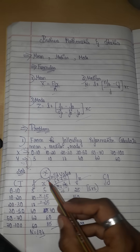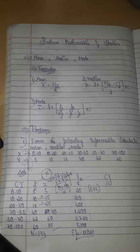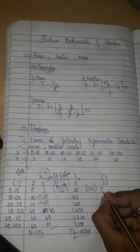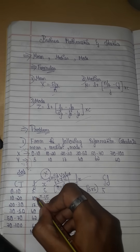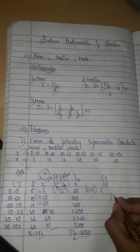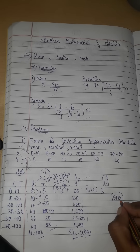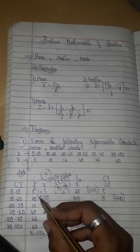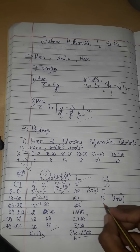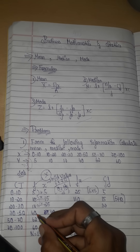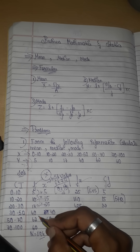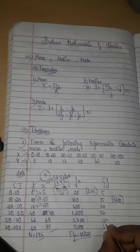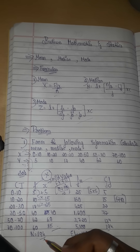To build the cf column: the first value is 5 as it is. Next, add 5 plus 10 to get 15. Then add 15 plus 17 to get 32. Then 32 plus 40. The cf column values become 5, 15, 32, 72, 134, and 194. The last value of cf should equal the total frequency.